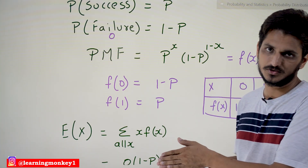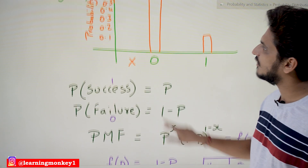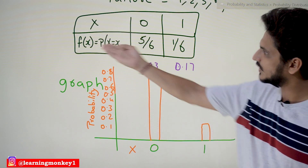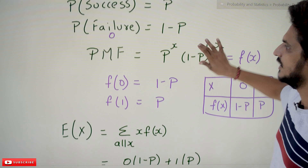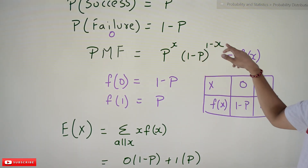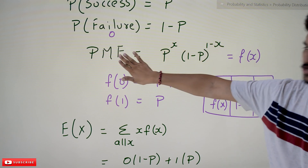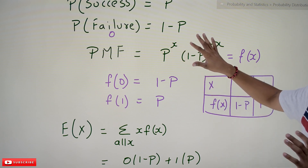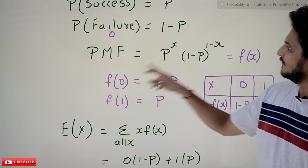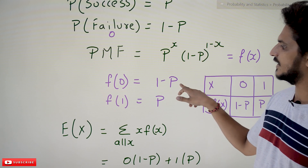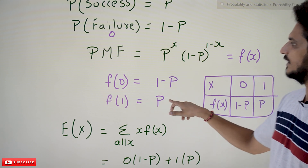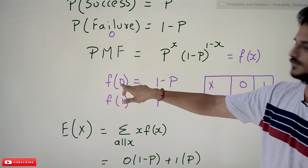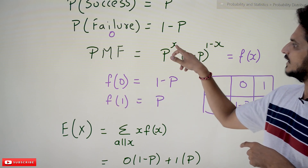Now let's look at the probability mass function for Bernoulli distribution. The f(x), which gives the probability value for discrete distributions, is called the probability mass function. The PMF is: f(x) = P^x × (1 − P)^(1−x). If you substitute x = 0, you get P^0 × (1−P)^1 = 1 × (1−P) = 1−P. If you substitute x = 1, you get P^1 × (1−P)^0 = P × 1 = P.